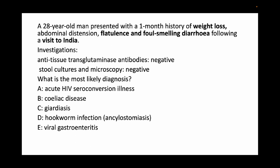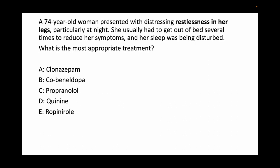Let's look at a GI example. Weight loss, flatulence, foul-smelling diarrhea, a trip to a tropical country — additionally in this question the test results show that anti-TTG antibodies are negative. The answer is giardiasis. Quickly identify these questions, recognize the pattern, and move on.